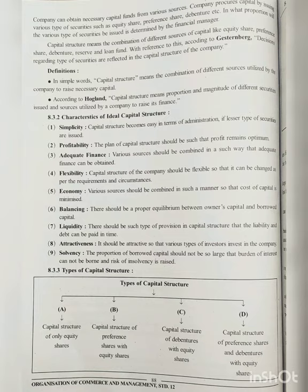Next, section 8.3.3 covers the types of capital structure. First is capital structure of only equity shares — capital is raised solely through equity shares. Second is capital structure of preference shares with equity shares. Third is capital structure of debentures with equity shares — bonds are issued alongside equity shares. Fourth is capital structure of preference shares and debentures with equity shares — all resources including preference shares, debentures, and equity shares are utilized together.